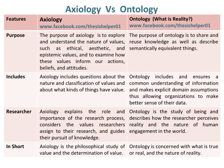Axiology explains the role and importance of the research process, considers the values researchers assign to their research, and guides their pursuit of knowledge. Whereas, ontology is the study of being and describes how the researcher perceives reality and the nature of human engagement in the world.